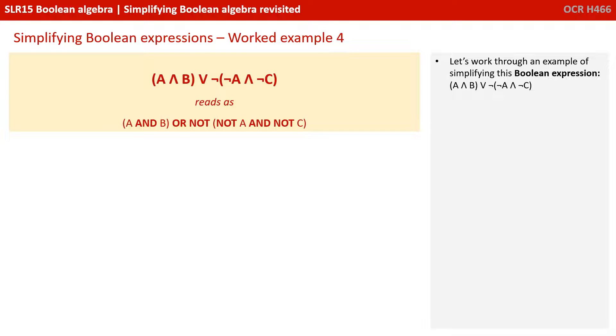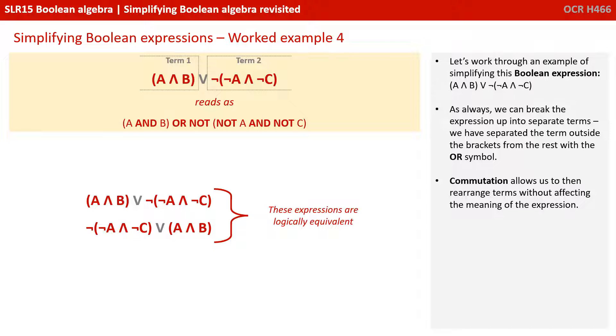Let's work through one final example of simplifying a Boolean expression. Here we have the expression A and B OR NOT NOT A and NOT C. So as always, we can break the expression up into separate terms. So we've separated the terms outside the brackets from the rest with the OR symbol.